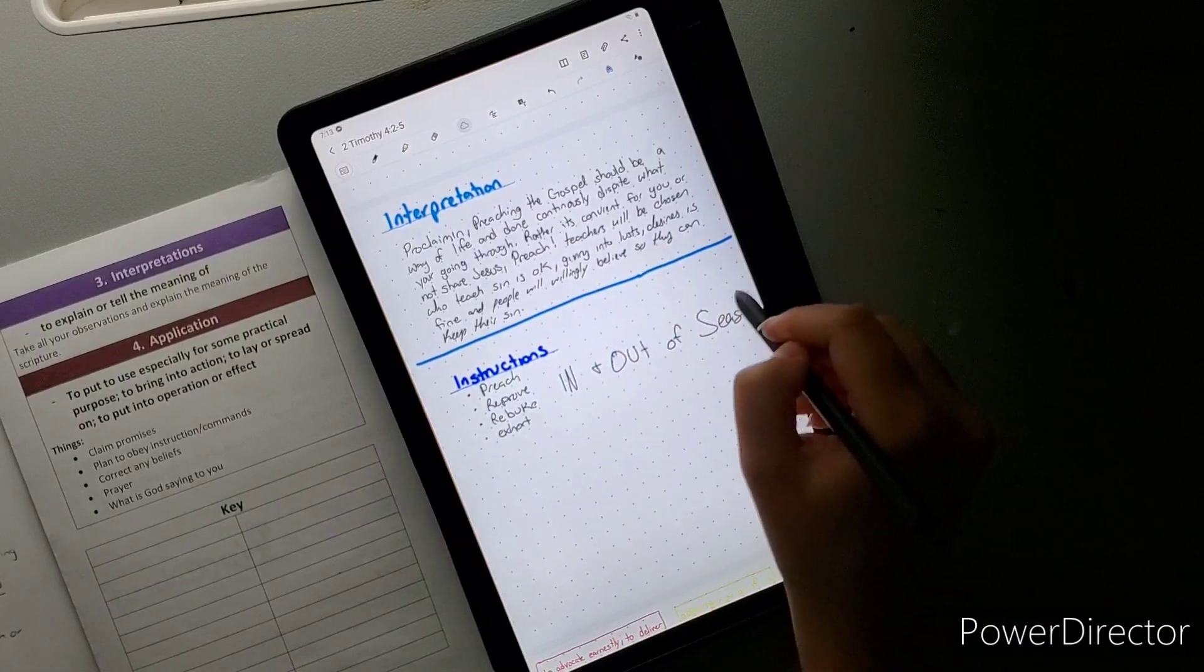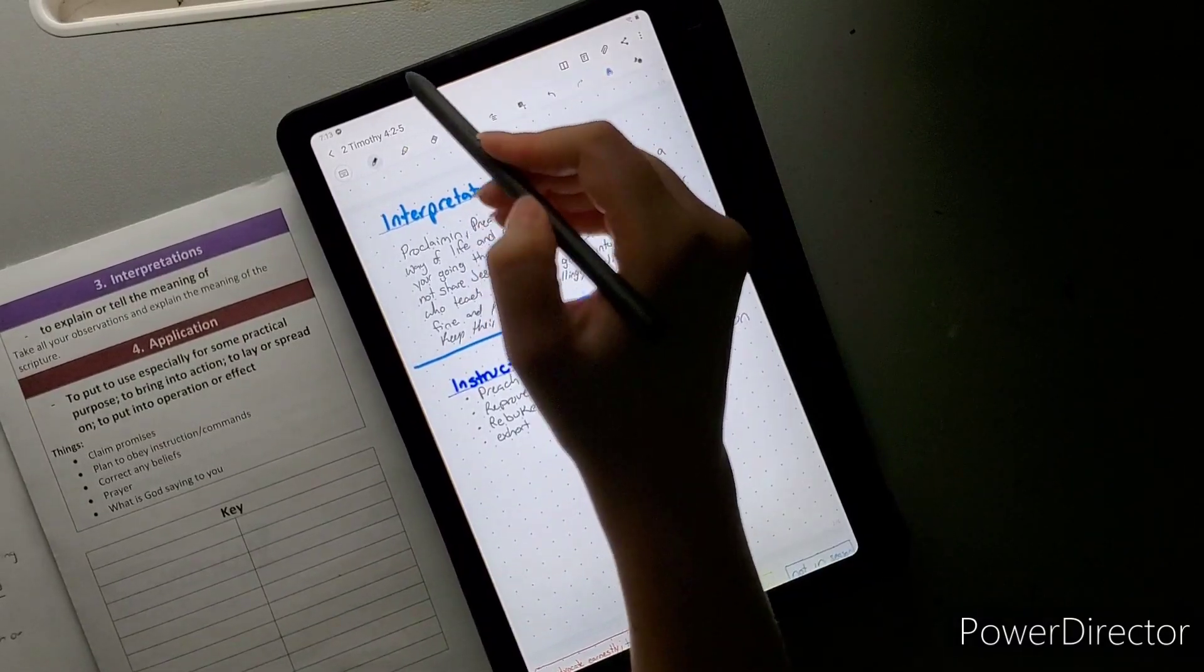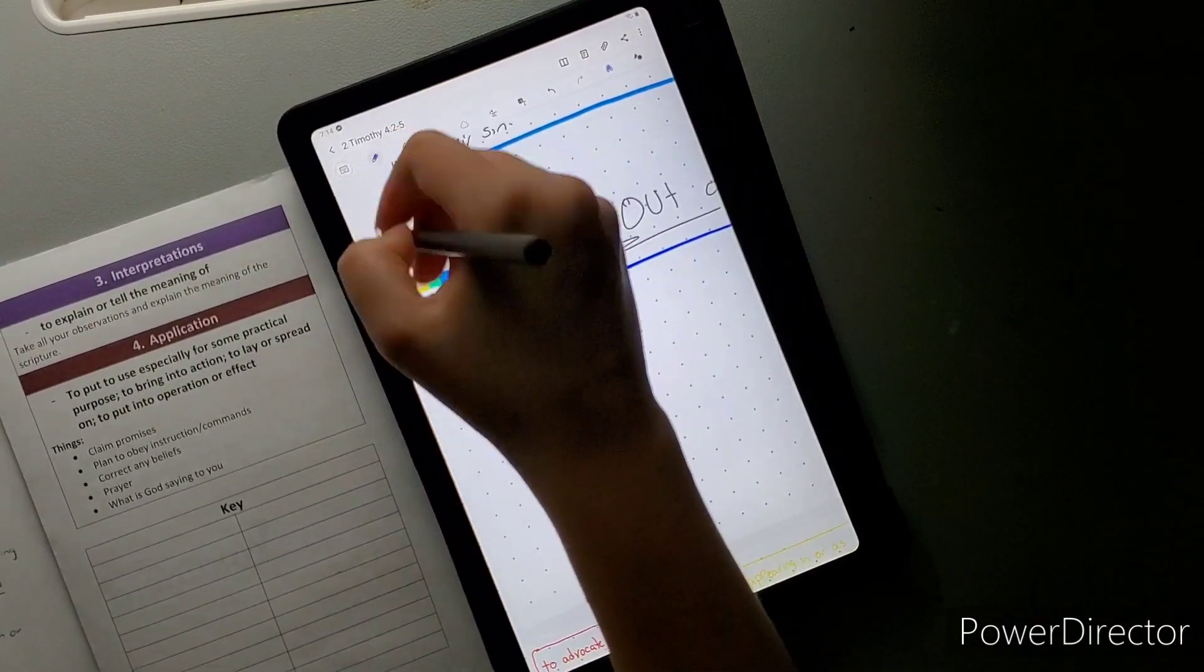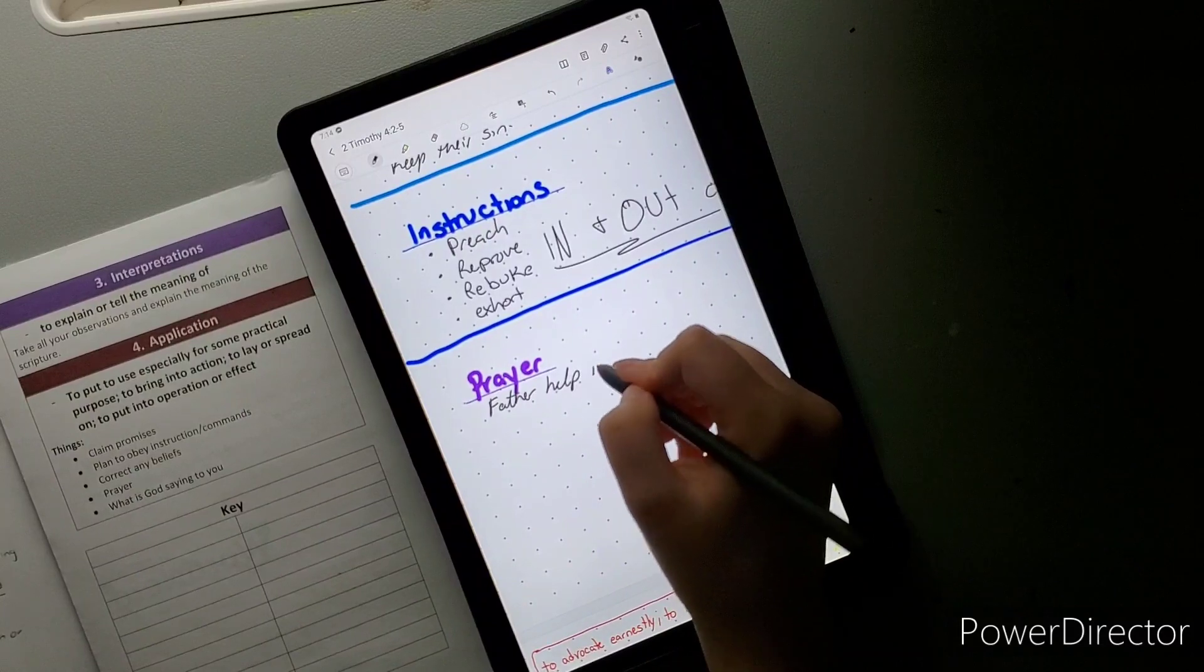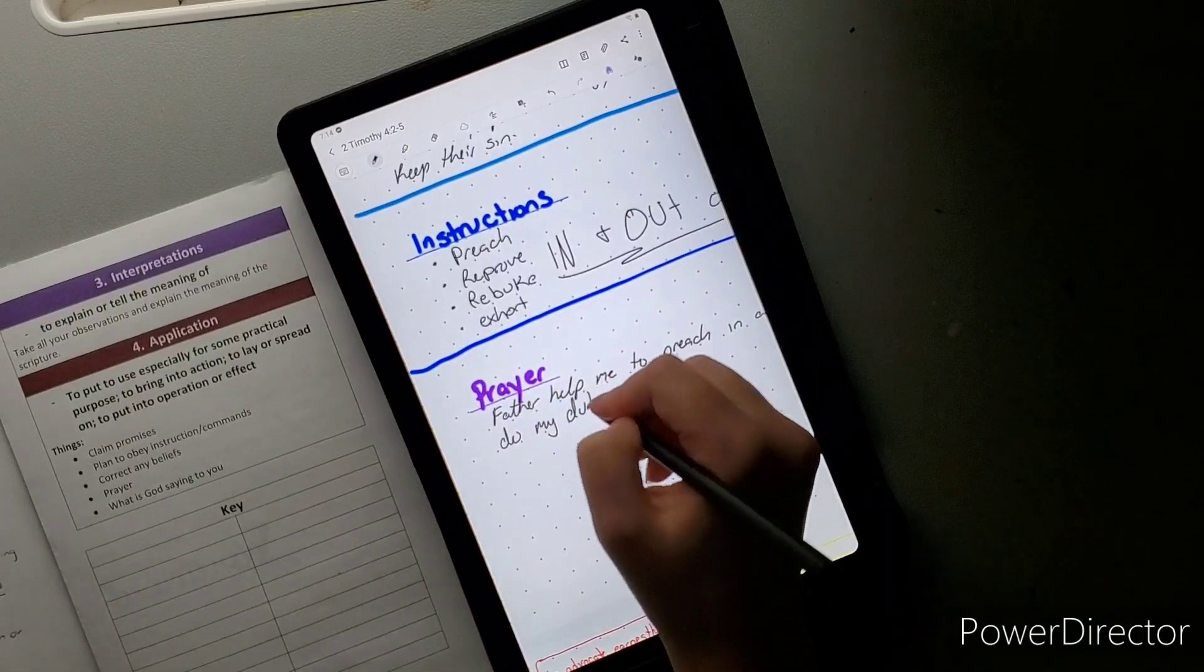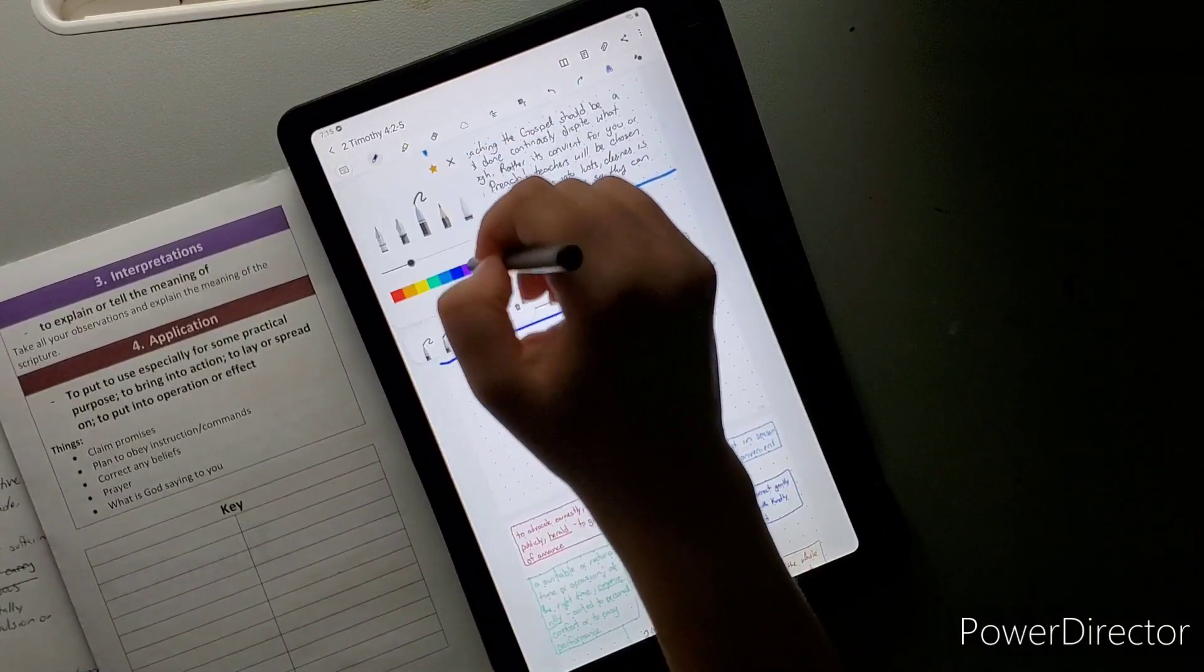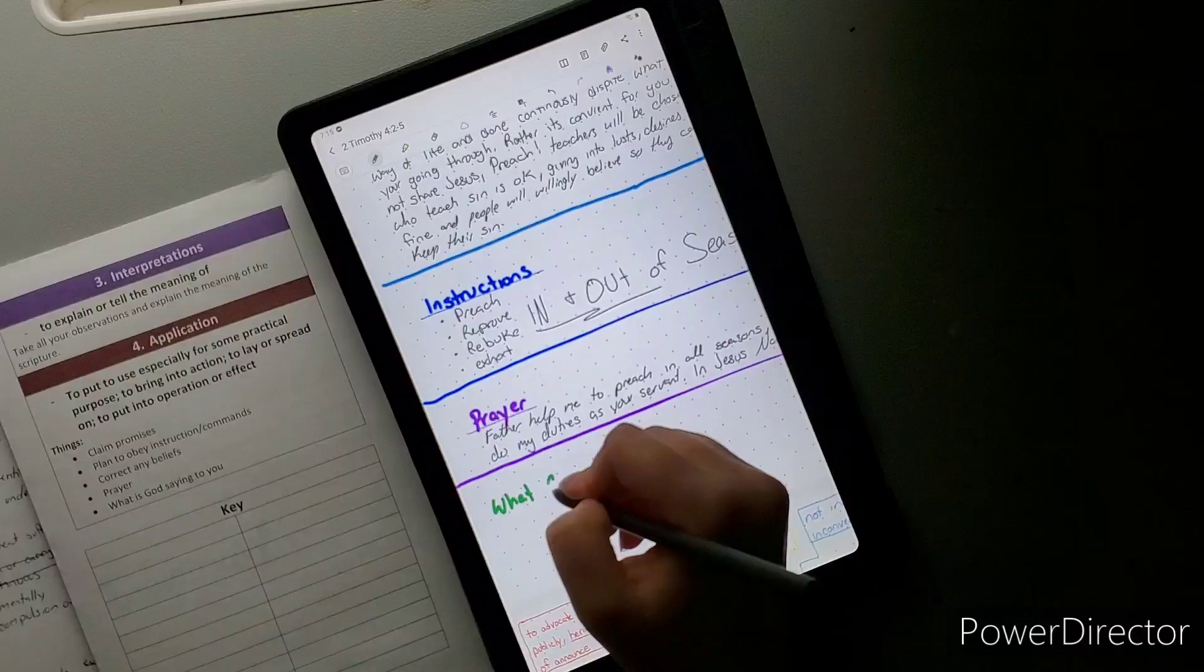Last but not least is what God is saying to me as I'm studying this. This part is going to be different for each and every person. This is a personal thing. I think God can say something through scripture, something different with the same scripture, just by what season and what situation you may be going through. But for me, it's be ready to preach the gospel at all times. I mean that's really what he's saying. I don't really care what you're doing, you need to be ready to do this and preach me.